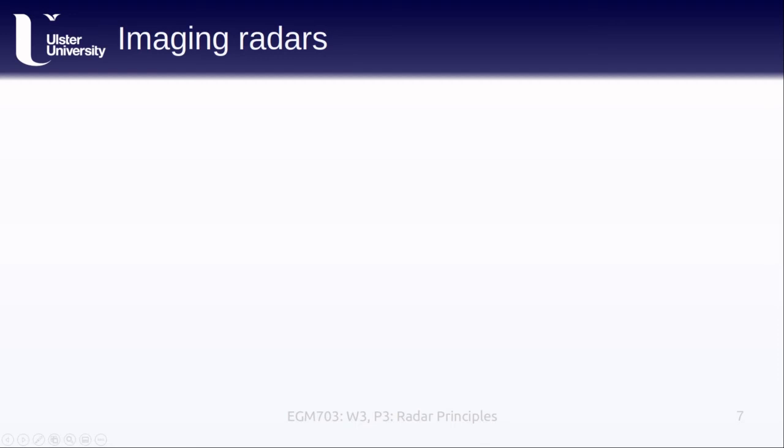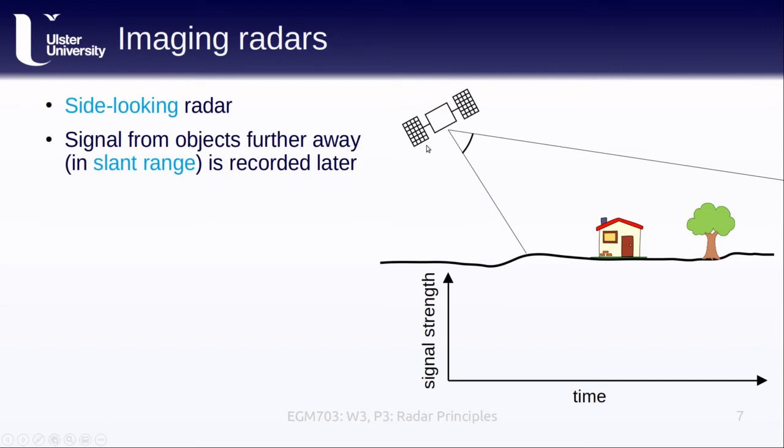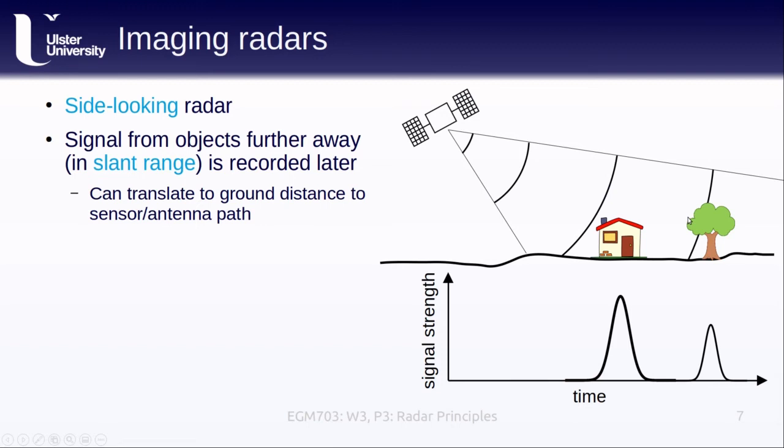Next up we come to imaging radars. Imaging radars are tilted to the side rather than looking straight down. This is so that we can make measurements at different distances or ranges along the ground. The signal from objects further away in the slant range is going to be recorded later. As the signal goes out, the wavefront expands in a circular shape. So the signal from the house here will be returned first and the signal from the tree will come back later. Using trigonometry we can transform the distance in the satellite's look direction, slant range, to the ground range or the distance along the ground from the satellite path.